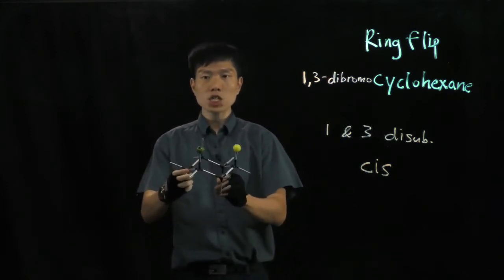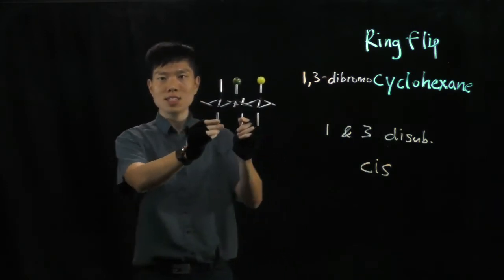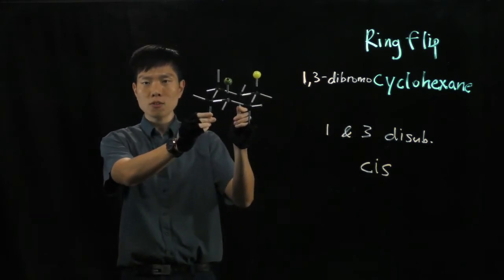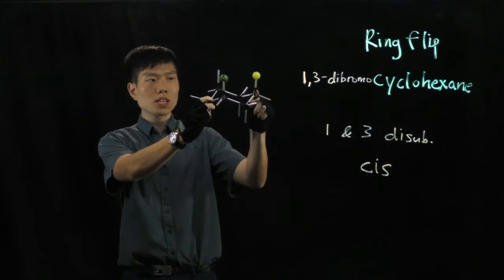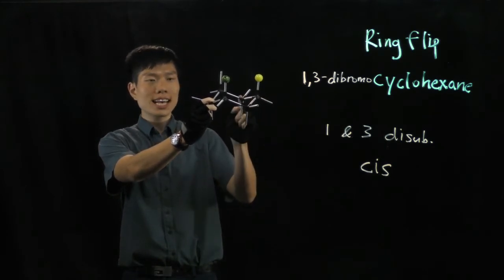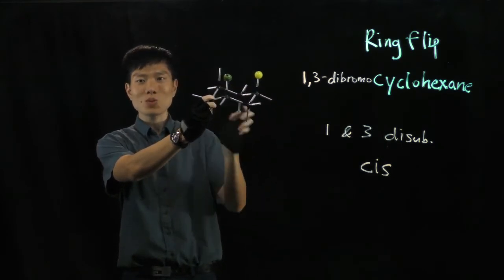Because if you look at this structure here through the sawhorse structure - can you see the sawhorse? Looking through an angle you will notice that if this atom is up, the next one's axial is down and the next one is up in this way.